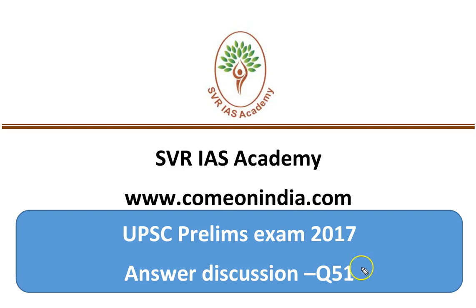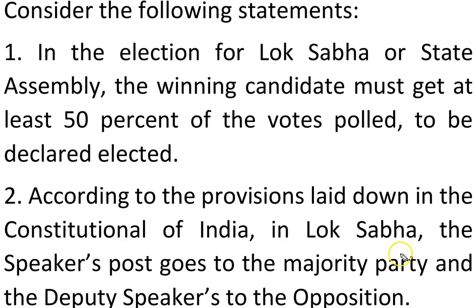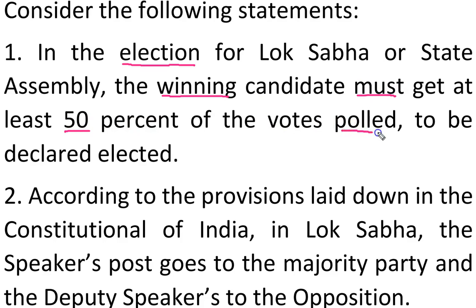Now let us see question number 51 of the UPSC preliminary examination 2017. Consider the following statements. Statement 1 is: in the election for Lok Sabha or State Assembly, the winning candidate must get at least 50% of the votes polled in an election to be declared as an elected person. This is wrong, so statement 1 can be eliminated.